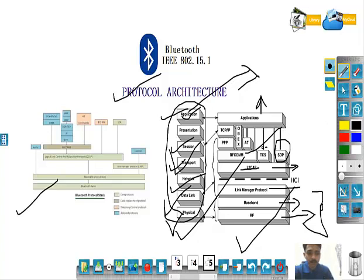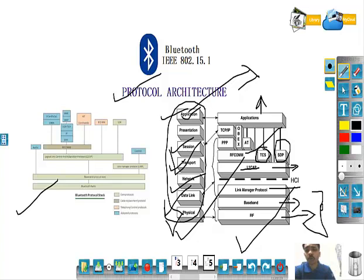TCS BIN — Telephony Control Specification Binary — is a bit-oriented protocol that defines call control signaling for the establishment of speech and data calls between Bluetooth devices. It also defines mobility management procedures for handling groups of Bluetooth TCS devices. Adopted protocols are defined by other standards organizations and incorporated into the overall Bluetooth architecture. Bluetooth's strategy is to invent only necessary protocols and use existing standards whenever possible.